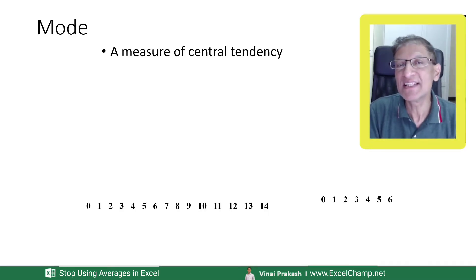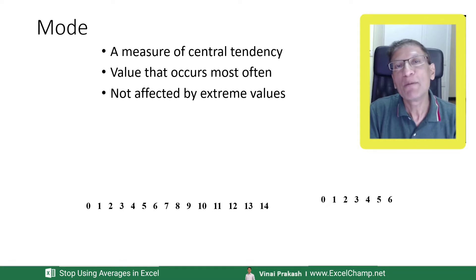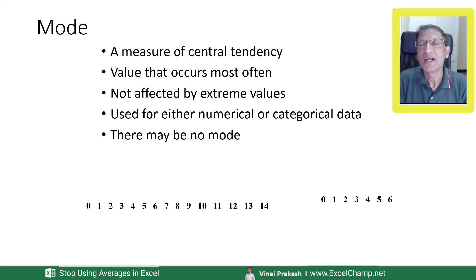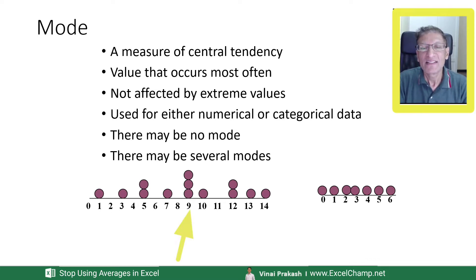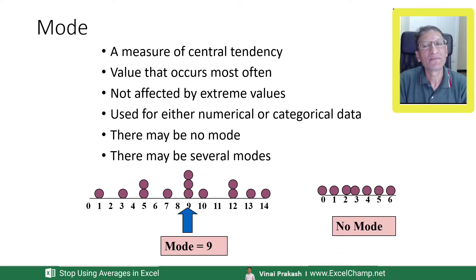Finally, let me quickly show you what a mode is. A mode is a measure of central tendency that shows you which number appears the maximum number of times — the value that occurs most often. Mode is not affected by extreme values, and the best thing is you can use it for numerical or categorical data, even text-based categories like gender or departments. Keep in mind, sometimes there may be no mode, and other times there may be multiple modes.